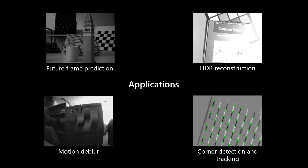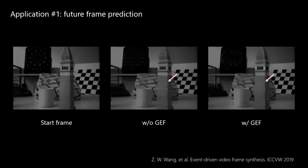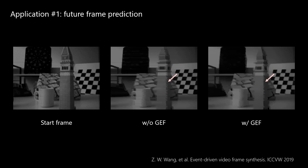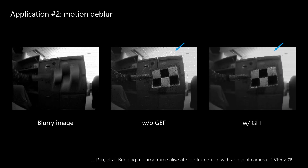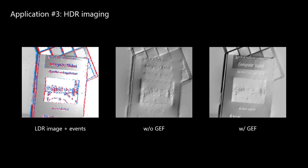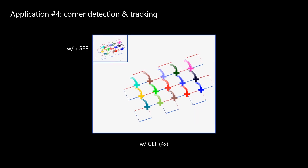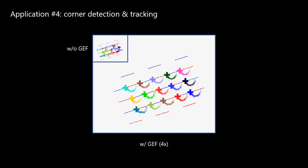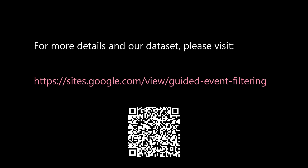We demonstrate the benefit of GEF with 4 sample applications. This is an application in predicting future video frames from an intensity image and subsequent events. This is an example in solving motion de-blur. This is an example of high dynamic range imaging. This is an example of corner detection and tracking. For more details, please visit our website.